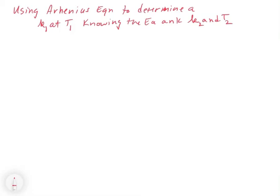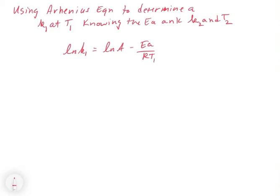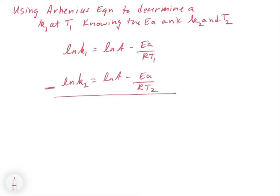We can recast the Arrhenius equation to do exactly that. If we take ln(k1) equals ln(A) minus Ea over RT1 as our first equation at temperature T1, and then a second equation ln(k2) equals ln(A) minus Ea over RT2, what's common between these two is the activation energy and the frequency factor. So we subtract these two simultaneous equations. On the left we get ln(k1) minus ln(k2), and when you subtract ln(A) from ln(A), that goes away.